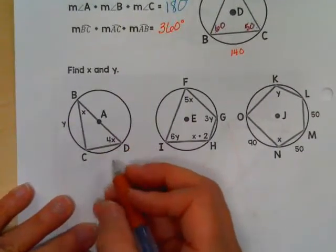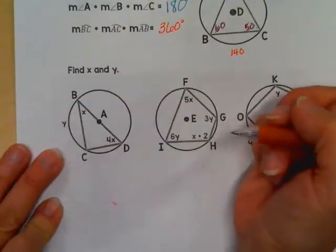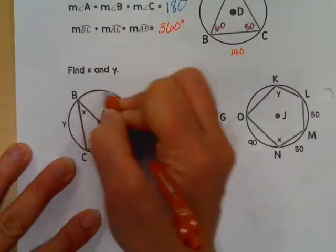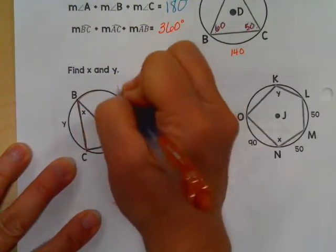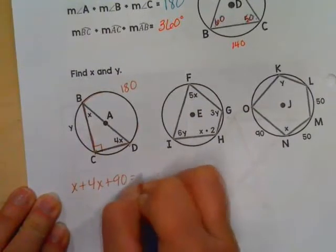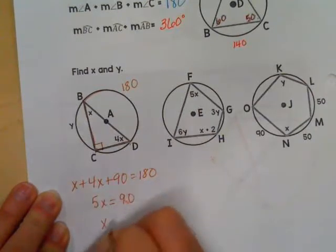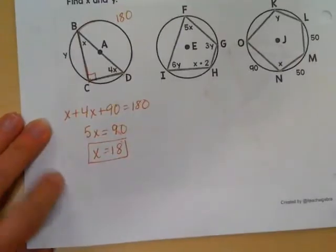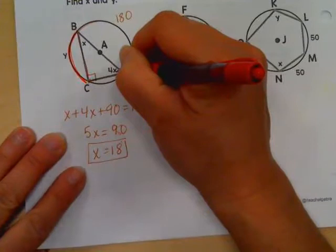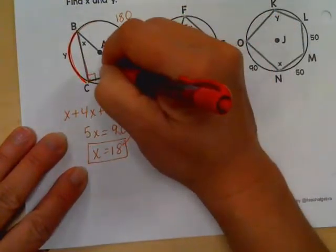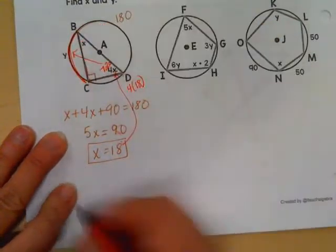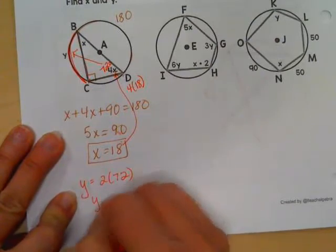All right, let's see if we can use that idea to help us find some missing parts. We want to find X and Y. Well, first of all, I have two angles here. What do I know about this third one? This inscribed angle has to be half of the arc, and from B around to D, this direction is 180. It's half a circle, so this has to be 90. So my first equation is X plus 4X plus 90 is going to have to equal 180. 5X will equal 90, which means X is going to equal 18. All right, to try and find Y, it's part of this arc. This arc is going to be twice as big as whatever this angle is. So if I took 18 and plugged it in, 4 times 18 is going to make this angle 72. So because this angle is 72, the arc has to be twice as big. Y is going to equal 2 times 72. Y will equal 144.